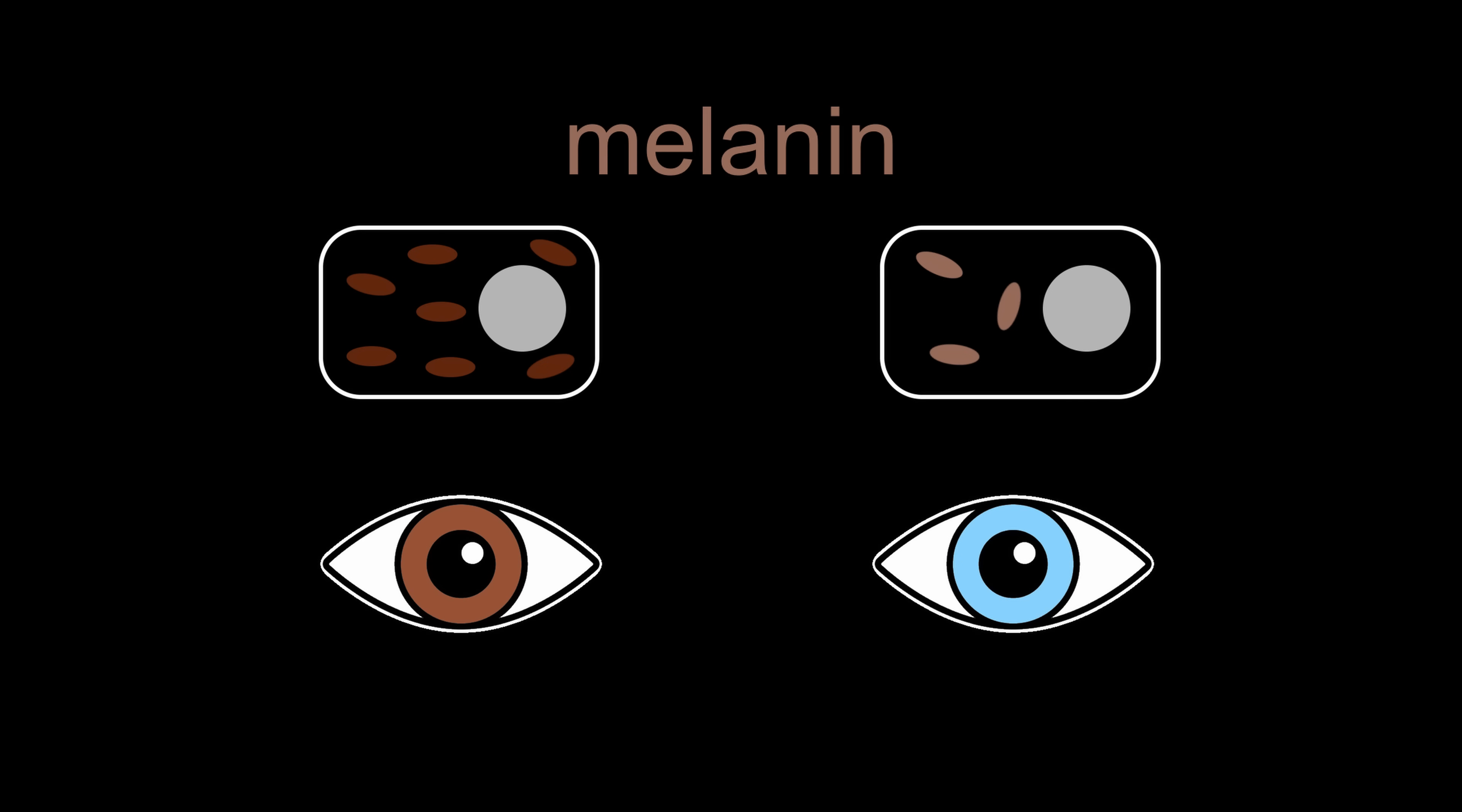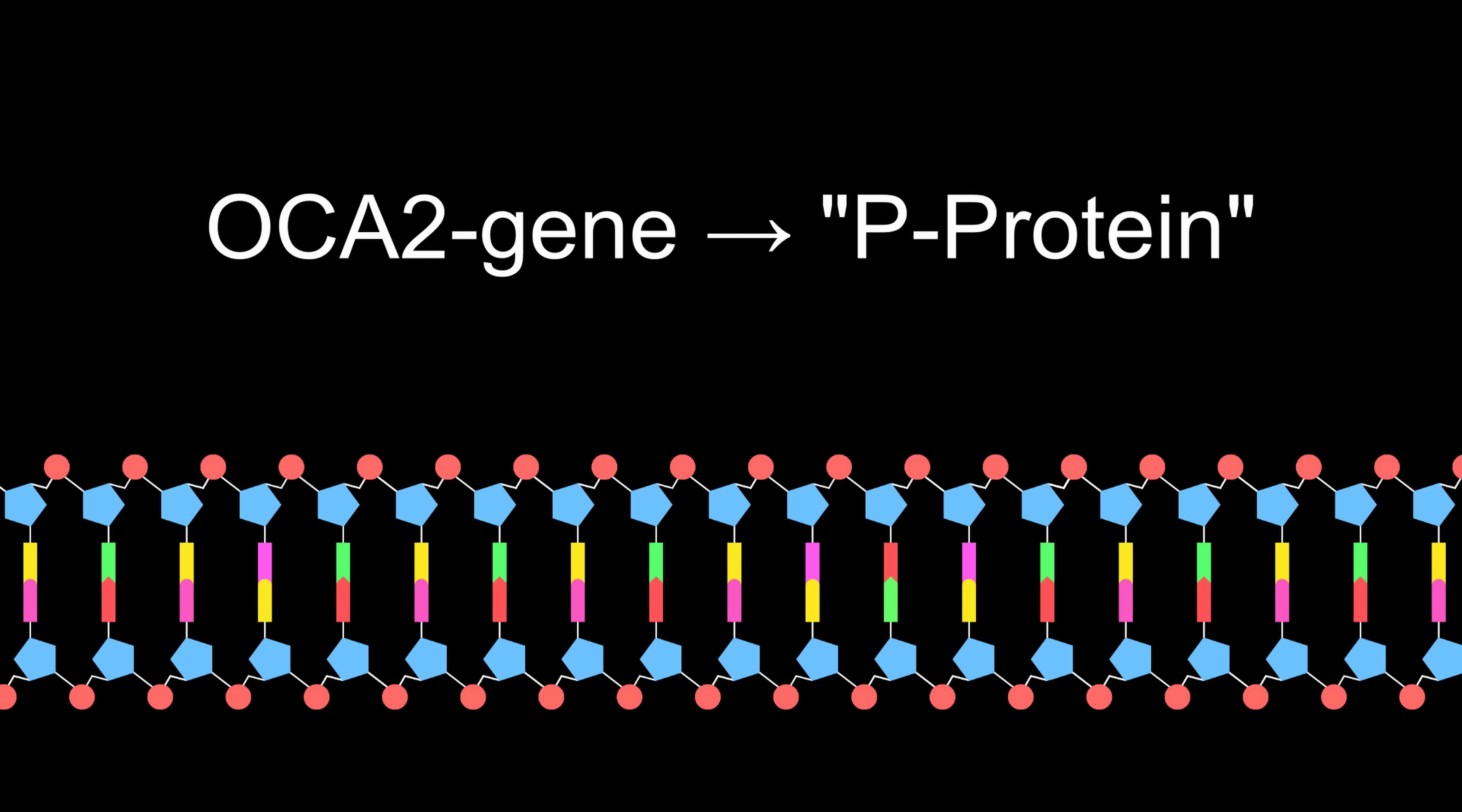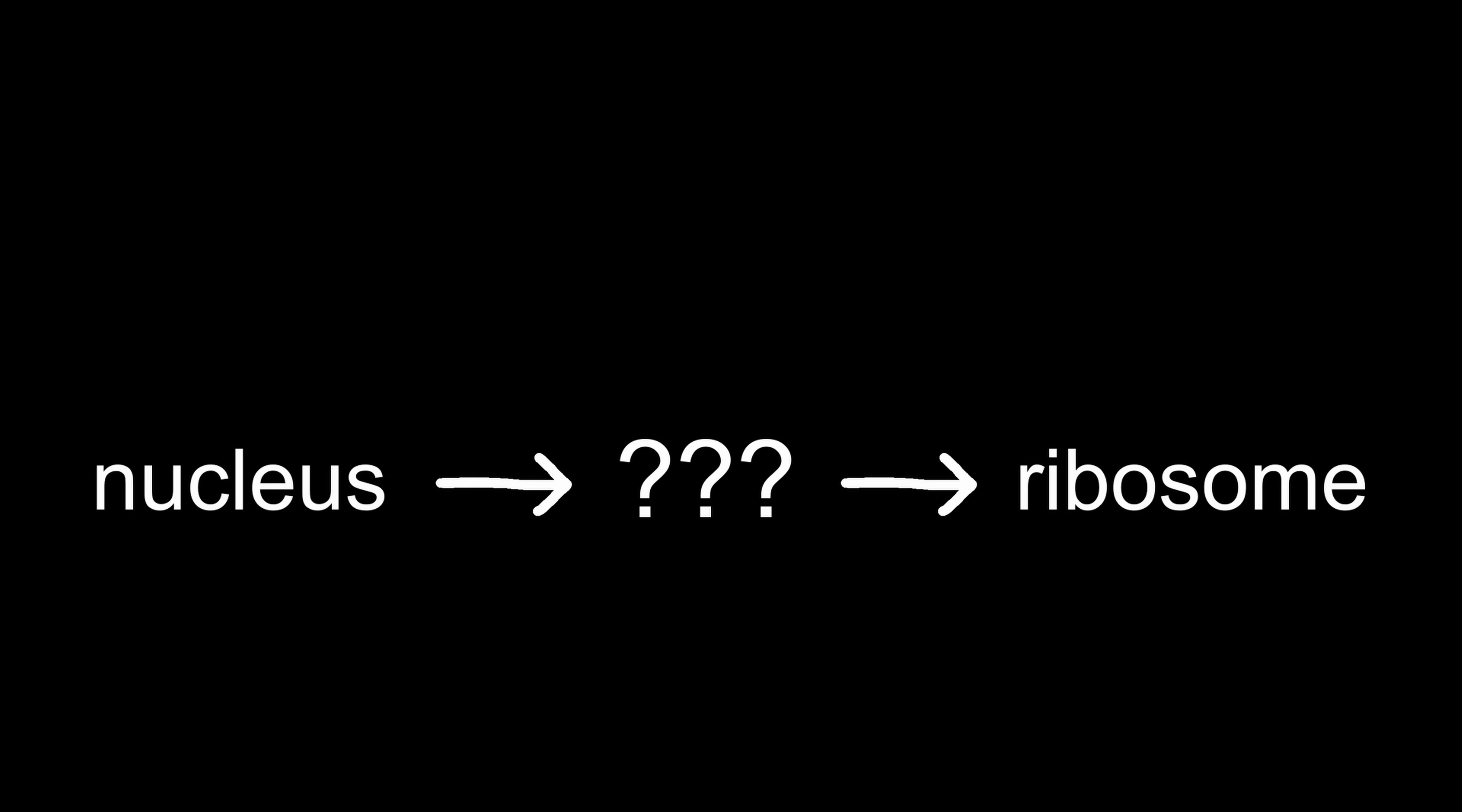For example, the difference between brown and blue eyes is the amount of a pigment called melanin in the cells of the iris. The OCA2 gene codes for p-protein, which we believe controls the amount of melanin in cells, meaning that the proteins made from this gene could be what determines your eye color. Pretty cool. There is just one issue. Your DNA and its information is in the nucleus, but proteins are made in organelles called the ribosomes. How do we get the information from A to B?